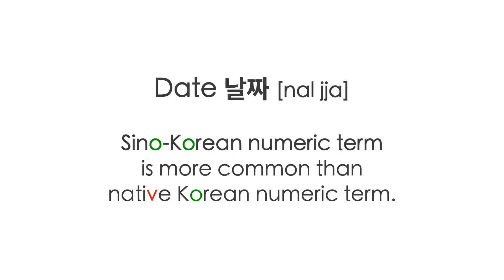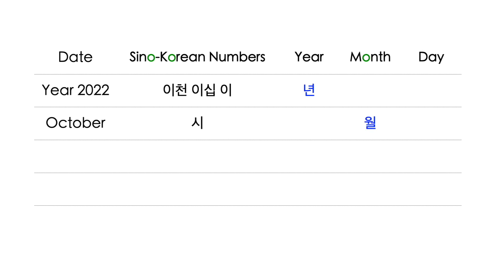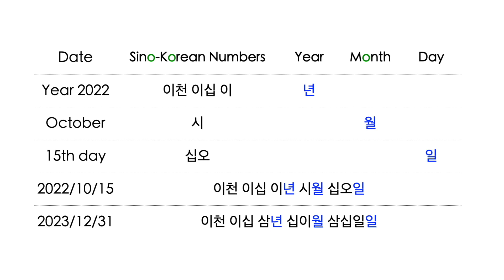It is more common to use Sino-Korean numeric terms for dates. The order for dates in Korean is year first, followed by month and day. Year 2022 is 이천 이십 이 년 (년 is the Sino-Korean word for year). October is 시월 (월 is the word for month). 10 is normally 십, but instead of 십 월, it's said 시월 for better flow of sound. The 15th day is 십 오 일. October 15th, 2022 is 이천 이십 이 년 시월 십 오 일. December 31st, 2023 is 이천 이십 삼 년 십 이 월 삼십 일 일.